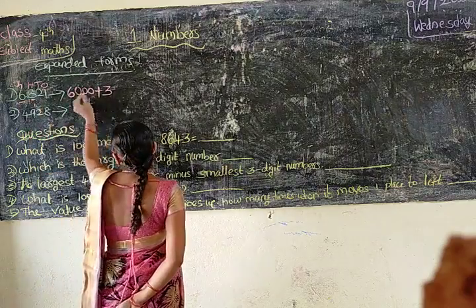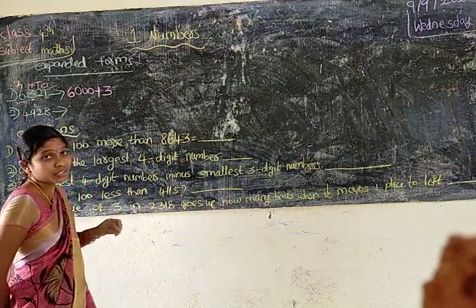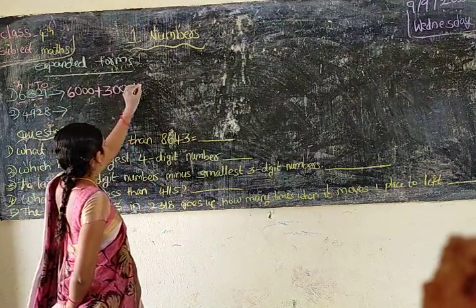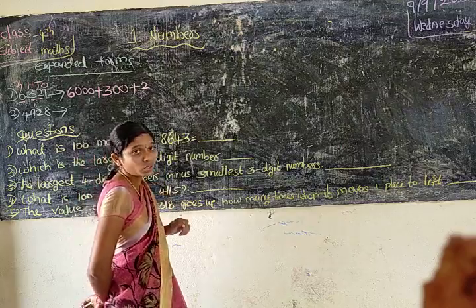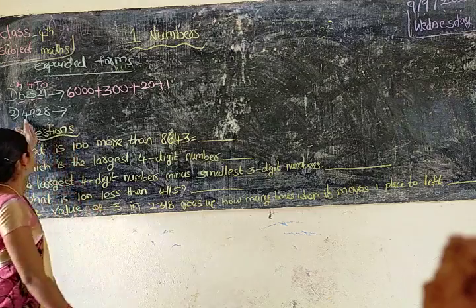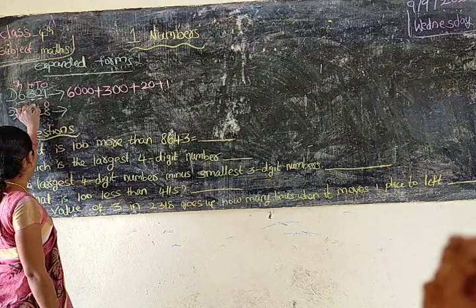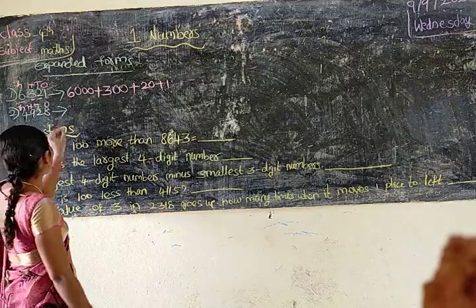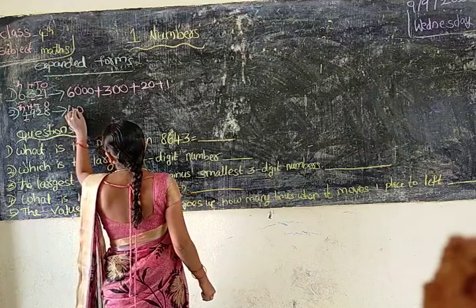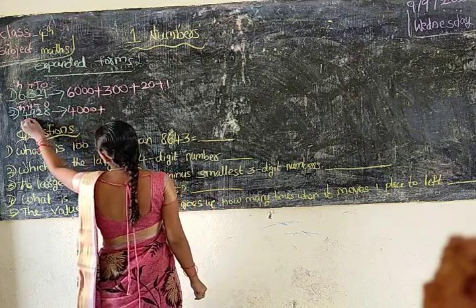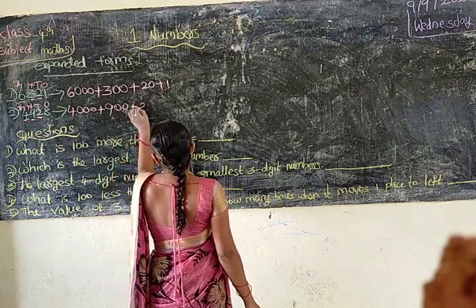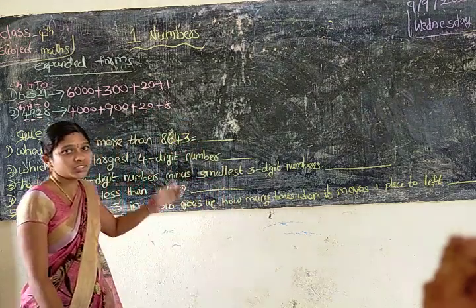And next, three is in the hundreds place — in hundreds, there are two zeros, so three hundred. And two is in the tens place — one zero, so twenty. And the last digit is eight, just ones. So for the number 4,928: four thousand — three zeros; nine hundred — two zeros; twenty — one zero; and eight. This is the expanded form.